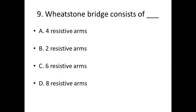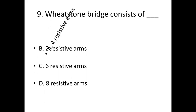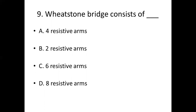Ninth bit. Wheatstone bridge consists of dash. Option A: four resistive arms. Option B: two resistive arms. Option C: six resistive arms. Option D: eight resistive arms. Answer: Option A, four resistive arms.